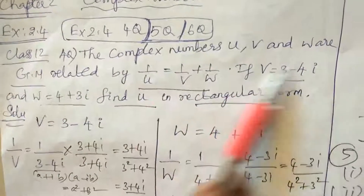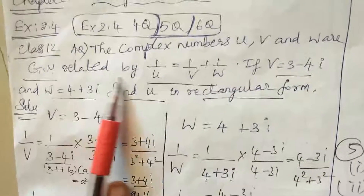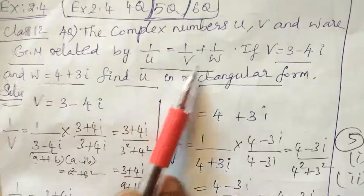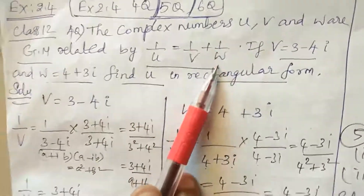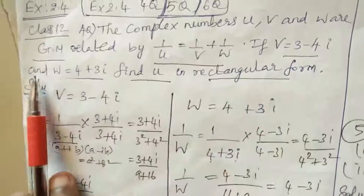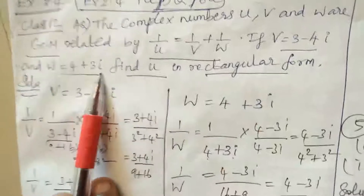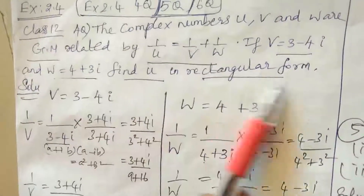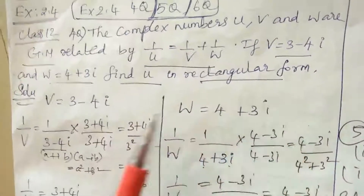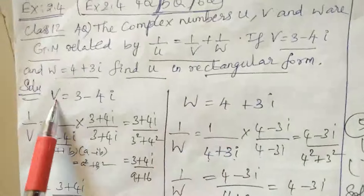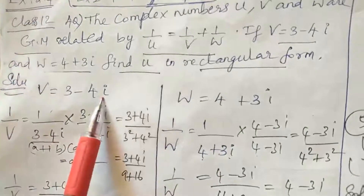The complex numbers U, V and W are related by 1/U = 1/V + 1/W. If V is equal to 3 minus 4i and W is equal to 4 plus 3i, find U in rectangular form.